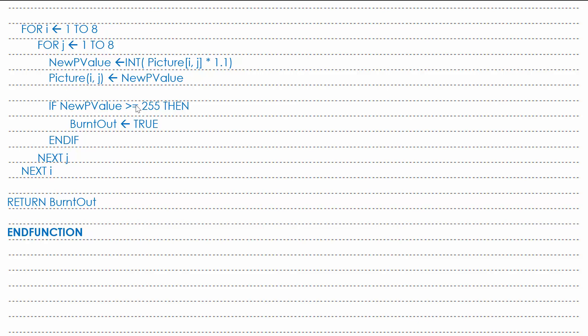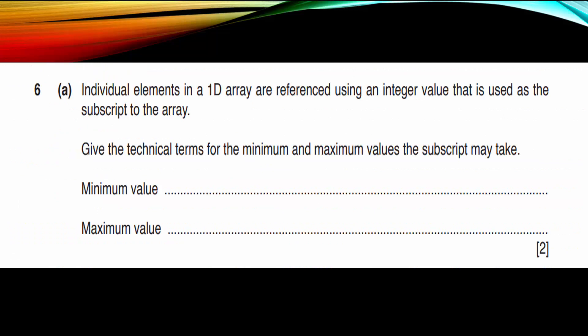Now let's look at another 1D and 2D array practice problem from a separate exam. The question states that individual elements in a one-dimensional array are referenced using an integer value used as the subscript to the array, and asks for the technical terms for the minimum and maximum values the subscript may take. The minimum value is the lower bound; the maximum value is the upper bound — another way of asking the same concept from the earlier question.